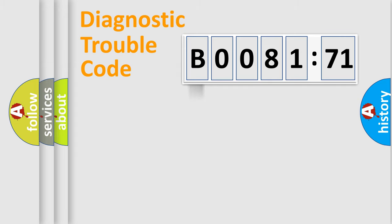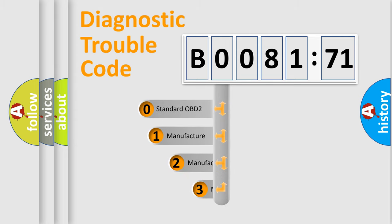Powertrain, body, chassis, network. This distribution is defined in the first character code.